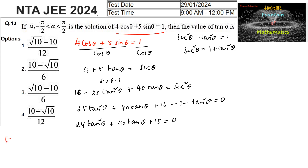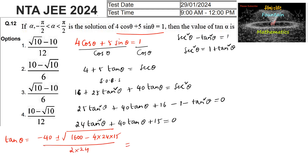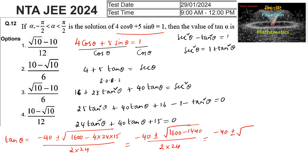Applying the quadratic formula, tanθ = (−40 ± √(1600 − 4×24×15)) / (2×24). The discriminant is 1600 − 1440 = 160.